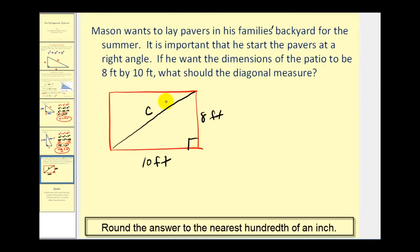Let's go ahead and try that. C squared must equal 8 squared plus 10 squared if this is a right triangle and therefore forming a right angle for this patio.